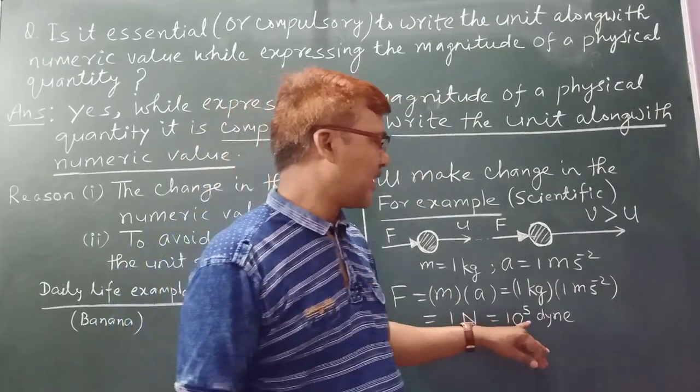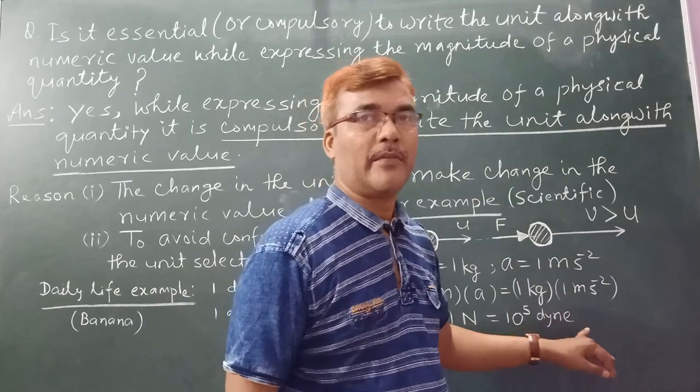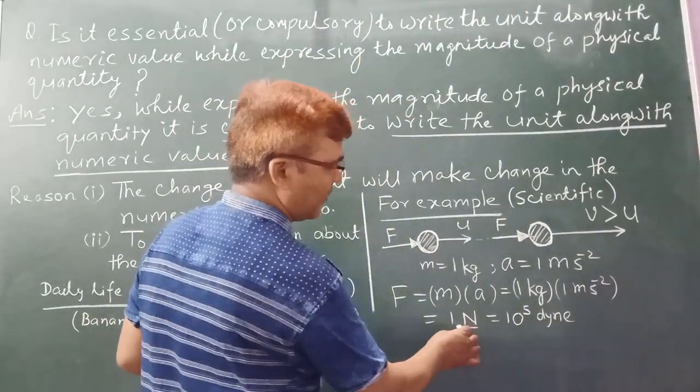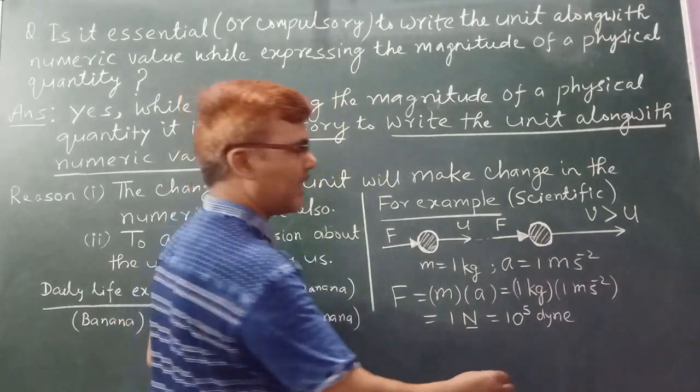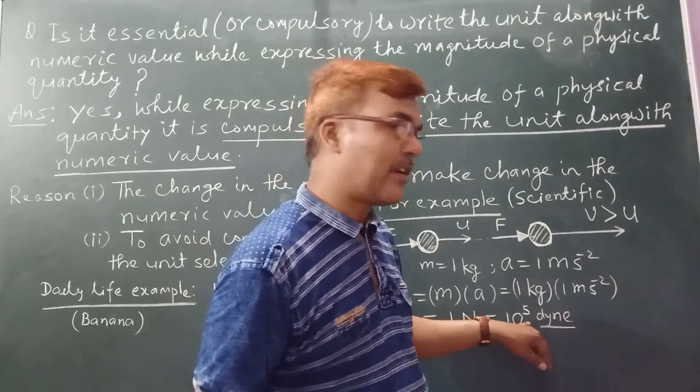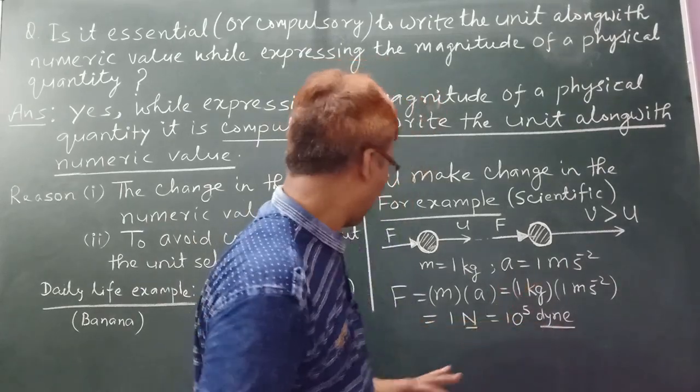Look, this unit is newton, numeric value is 1. And here unit is dyne, and numeric value is 10 to the power 5. It changed.